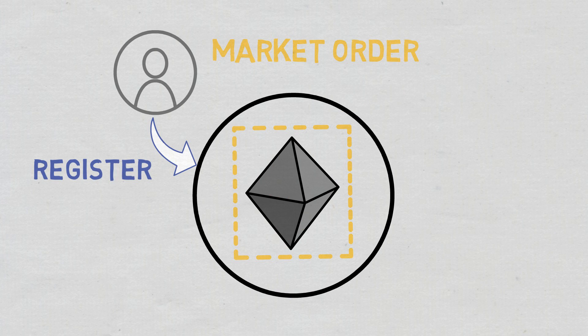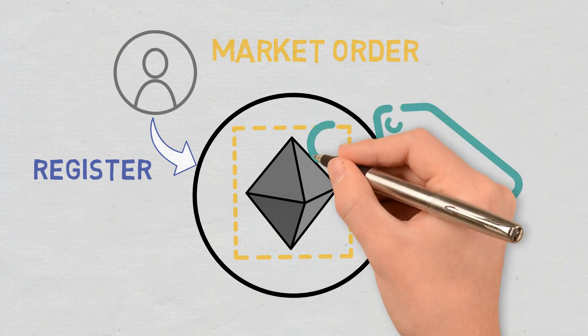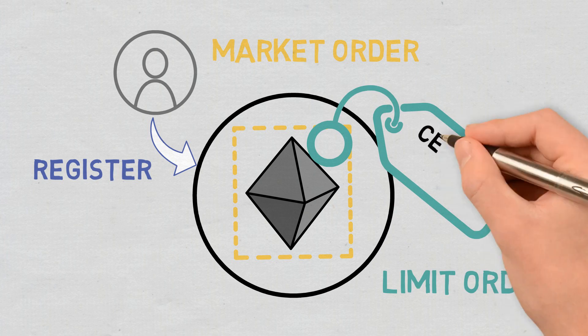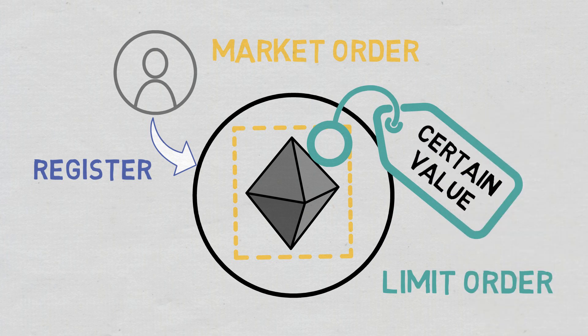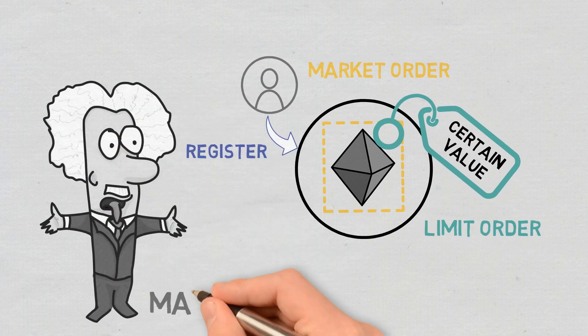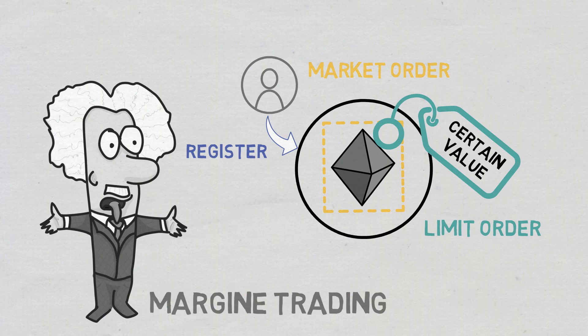Instead, if you want to buy ether once it reaches a certain value, you can place a limit order in which the platform will initiate the desired transaction when the price reaches that value. There are also more complicated forms of trading, such as margin trading, but the ones mentioned above are the most used today.